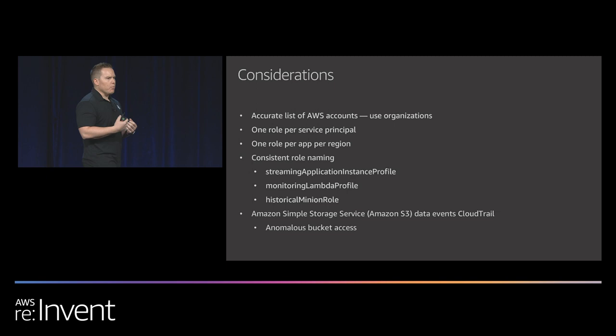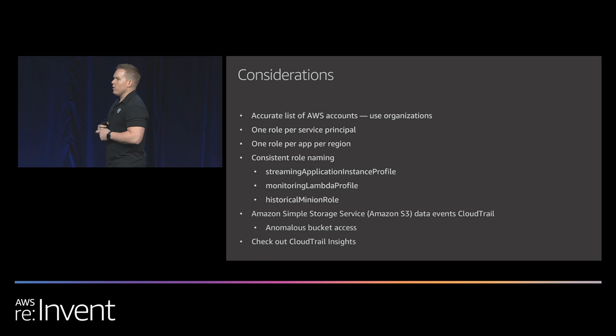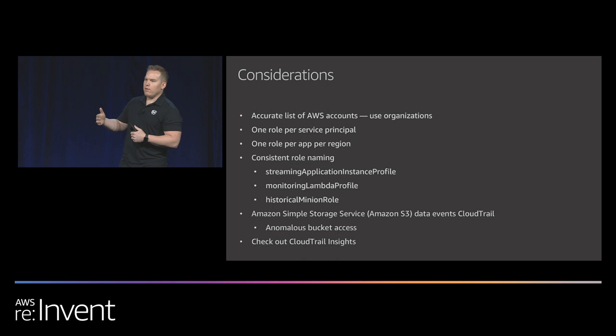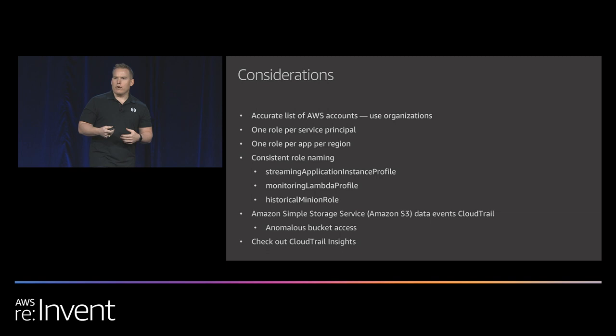As you do cross-account access, maybe you want to name a role 'minion role' so you know it's being acted on by an application in another account. You can also dig toward resources — we know anomaly detection based on service action, but do we know which S3 buckets we're targeting? If I typically only talk to three S3 buckets and all of a sudden I talk to four, or I'm talking to an S3 bucket not owned by my company, that might be anomalous. CloudTrail also just released a new feature called CloudTrail Insights, which focuses on the volume of calls. If your application usually launches 10 instances an hour and suddenly launches 100, that could indicate a code flaw or a crypto miner spinning up.